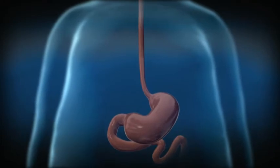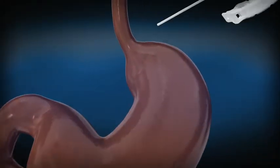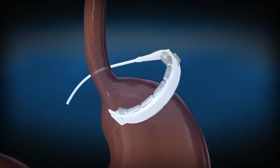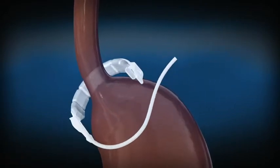The LapBand system surgery is usually performed laparoscopically. The device is inserted through one of five or six small incisions and is wrapped around the upper part of the stomach.